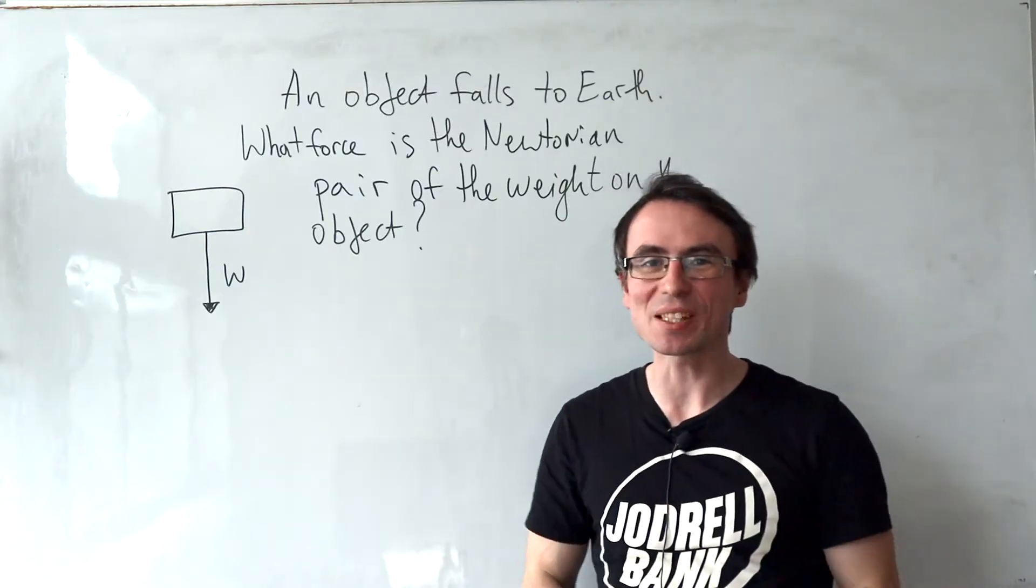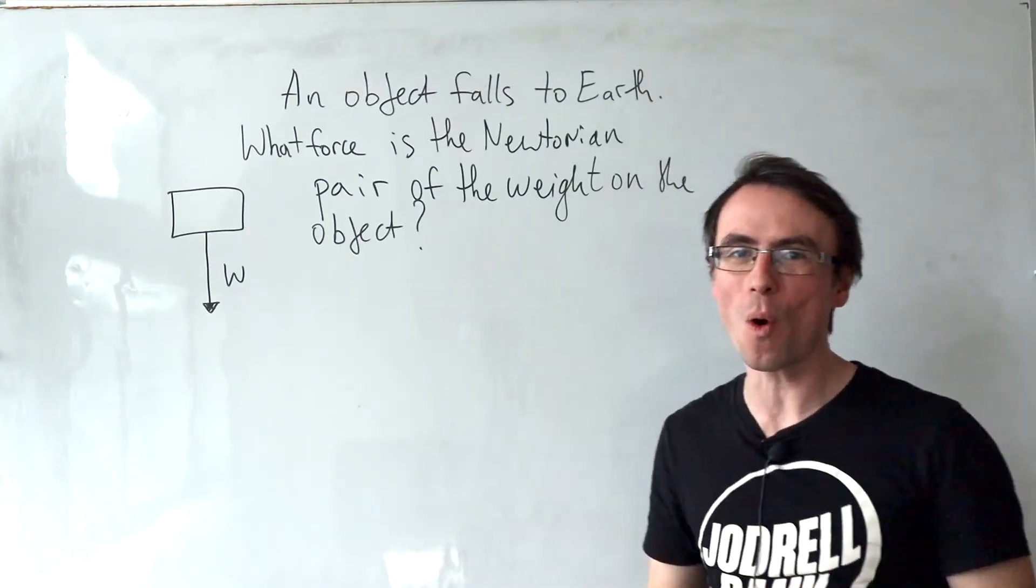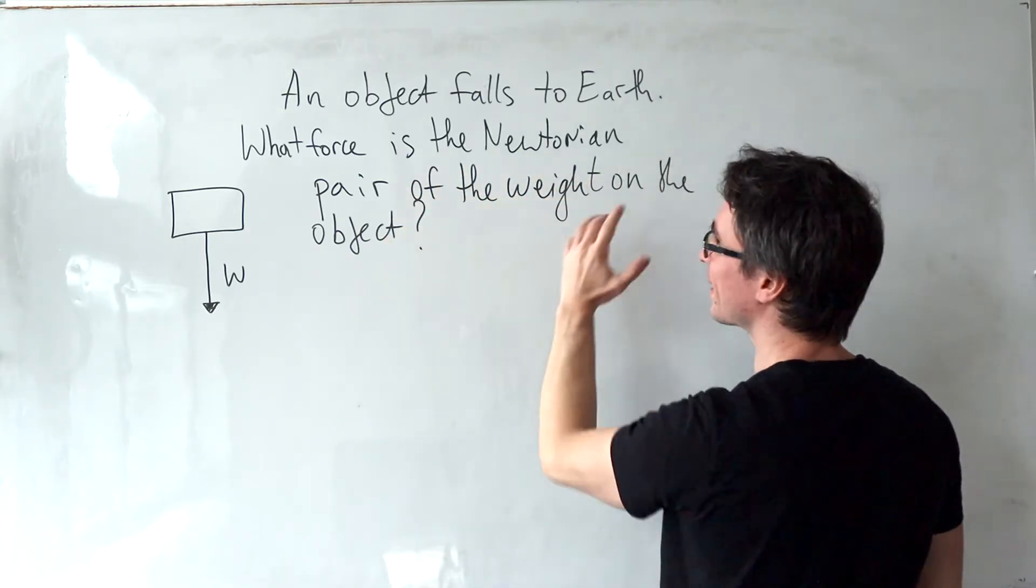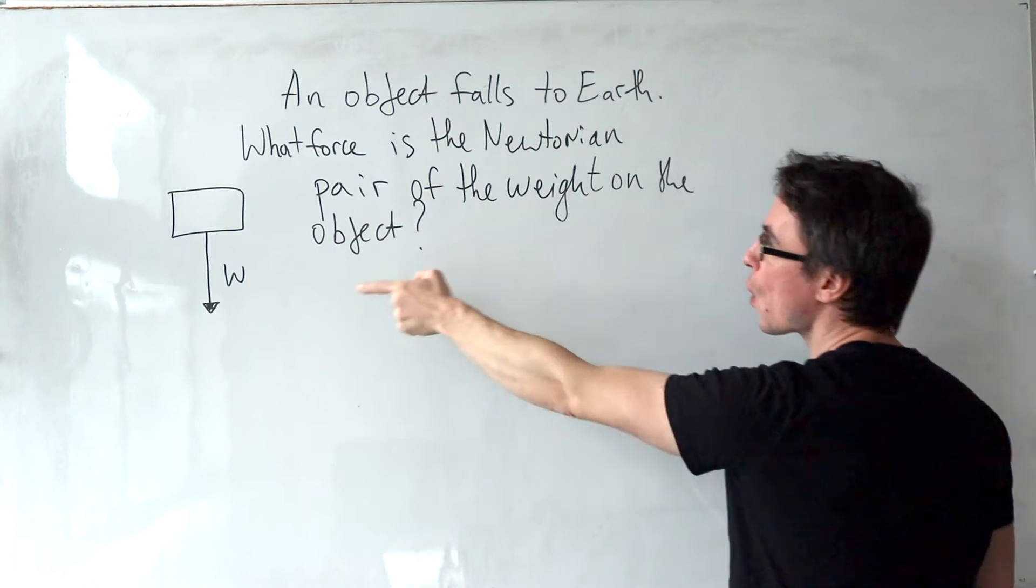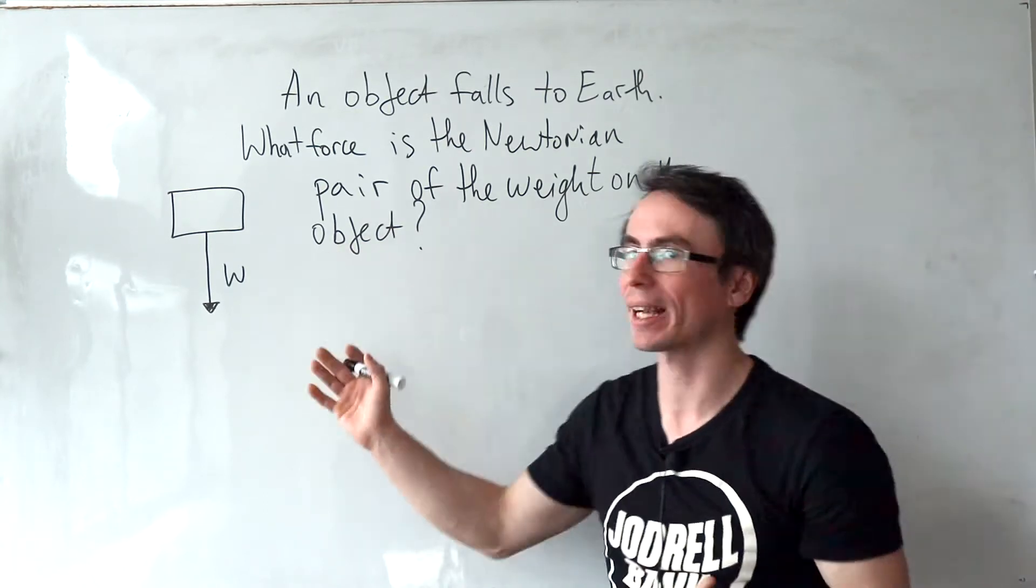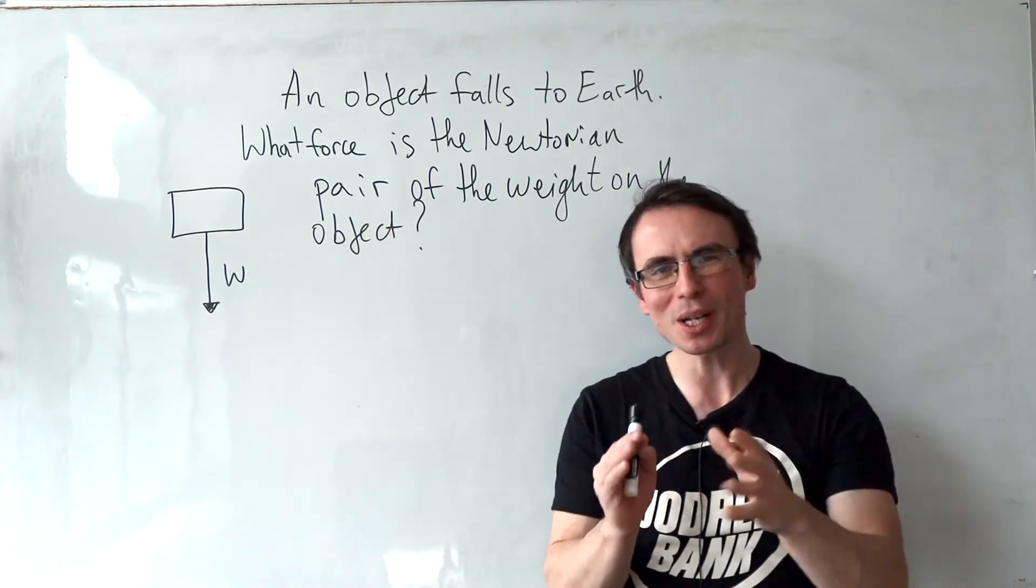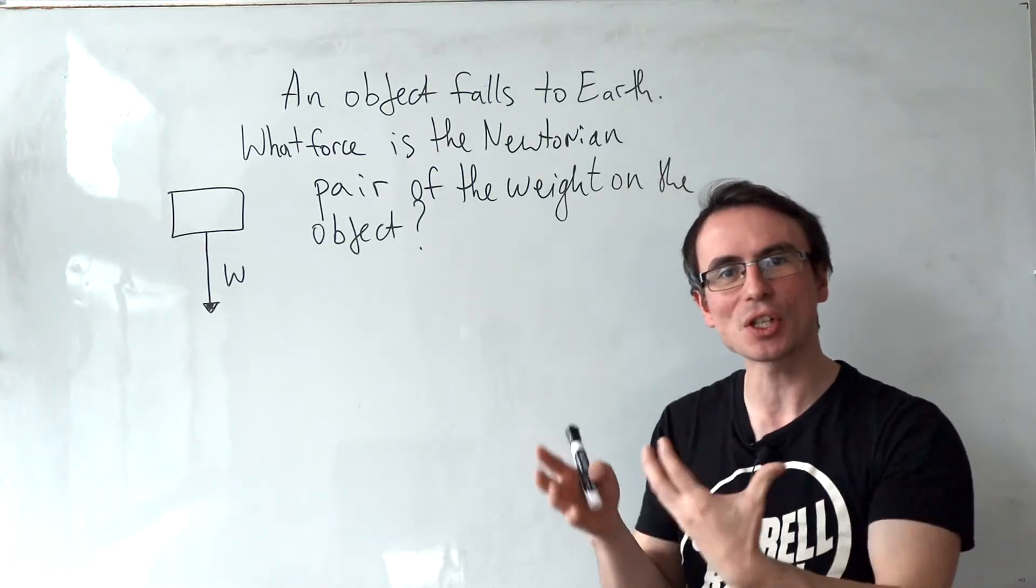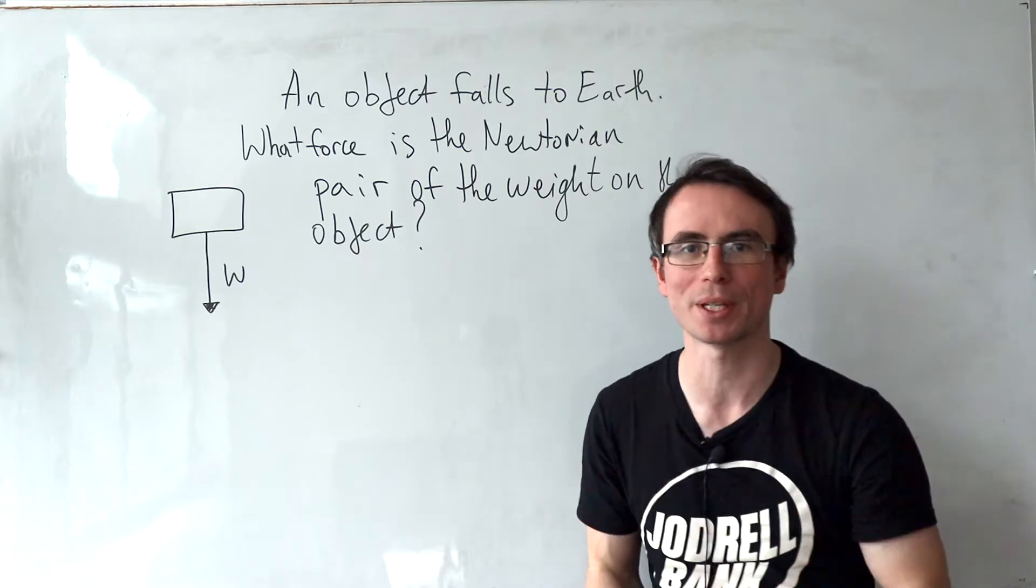Next one, and I've seen this appear multiple times in all exam boards. An object falls to Earth. What force is the Newtonian pair of the weight that's acting on the object? Well, this question is all about Newton's third law. If two objects interact, they exert equal and opposite forces on one another.